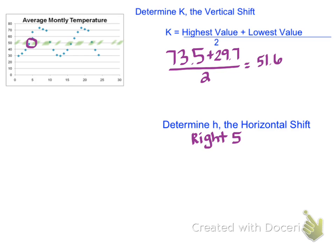Now that I know my shift right and my shift up, I have everything I need to put this all together to write my final equation, which ends up being y equals 21.9 times the sine of pi over 6 times x minus 5 plus 51.6. And you can see I just put everything together we just found to get that final equation.